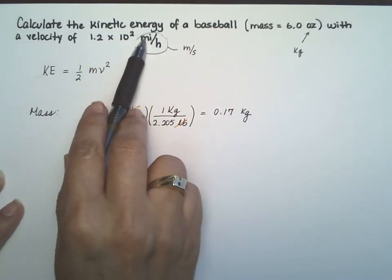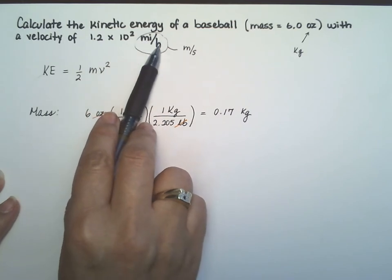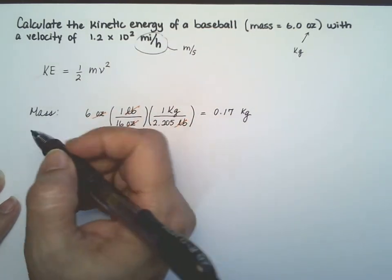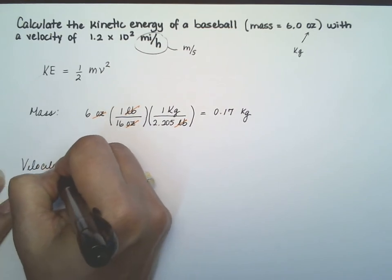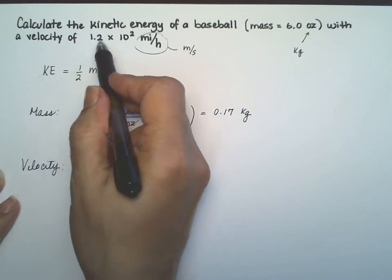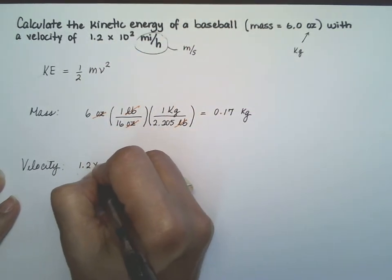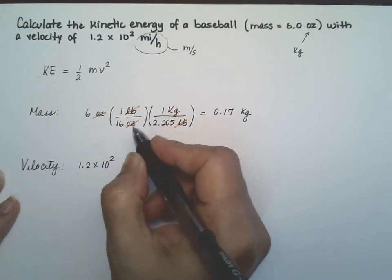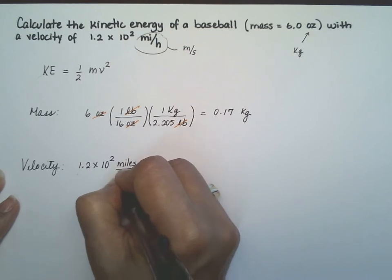Let's do this one. This one is a little more complicated because we have to change the miles to meters, the hours to seconds, but it's still doable. So we want the velocity. Start with, I don't know why they don't put 120, but let's just go ahead and leave it like that. Miles per hour. I'm going to write it out.